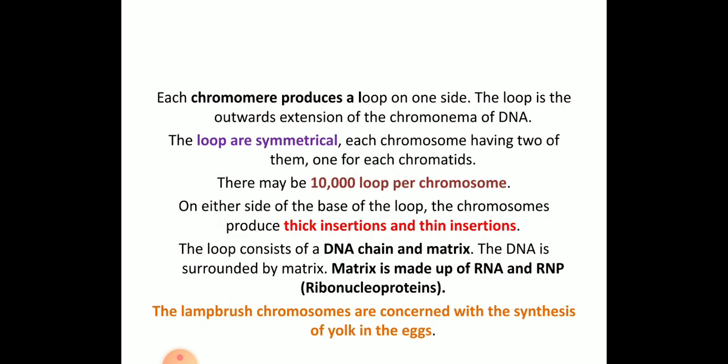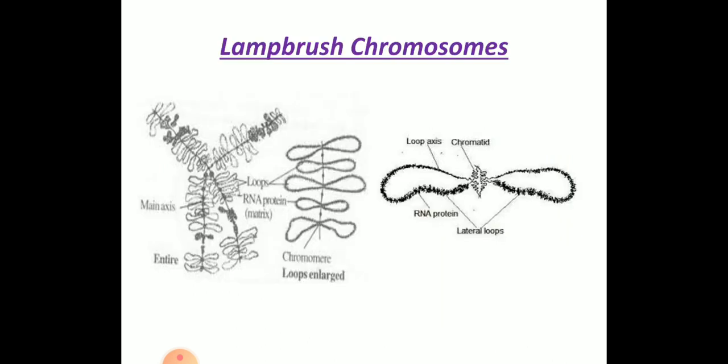The loops of the lampbrush chromosome are very much stranded and usually look like a brush, as you can see in the picture. In an enlarged view of one segment, RNA and protein are present in the loops, leading to the formation of the chromatid axis from which loops are suspended — giving it the characteristic lampbrush appearance.